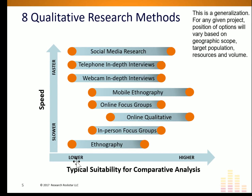We also have to think about whether a method is going to be suitable for appropriate analysis. In qualitative research we usually need to do some form of analysis, and the most common form is what we call comparative analysis. For example, if you do traditional focus groups and you're comparing the results from your groups in New York City to your groups in Houston, that's a form of comparative analysis. Or if you're comparing results from groups with working moms to groups with stay-at-home moms, that would also be comparative analysis. In quantitative research we have crosstabs and other techniques, but in qualitative research the minimum set of structured analysis is usually comparative analysis — and some methods are better for that than others.